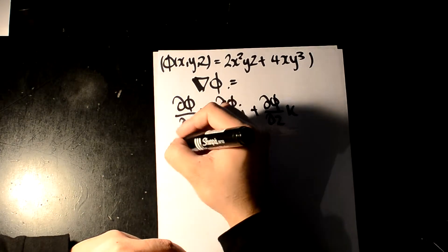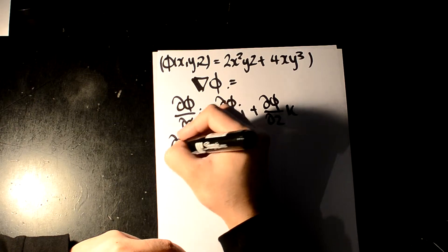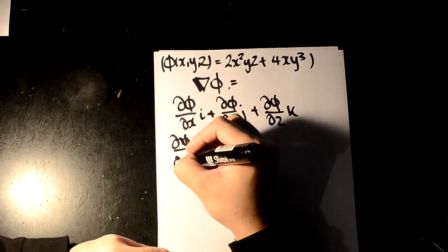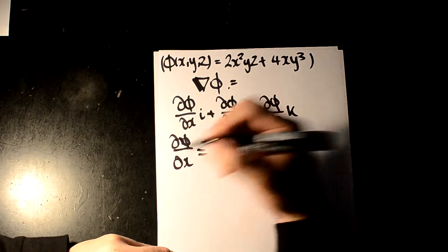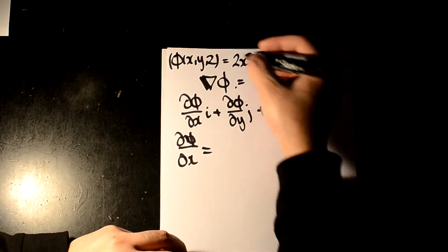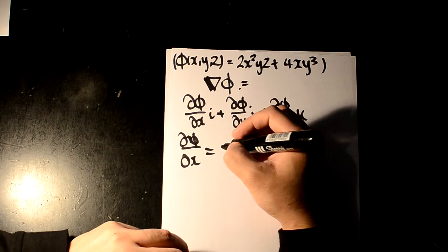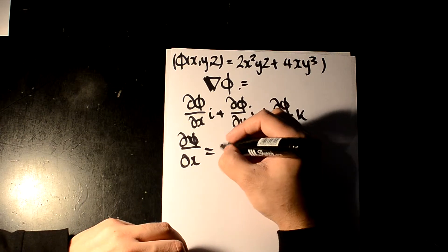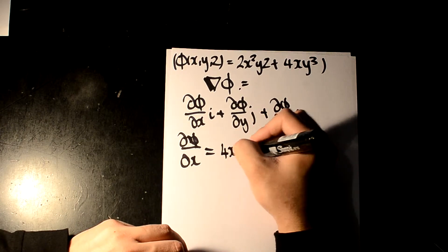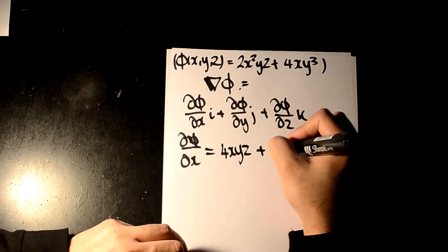So what they're actually asking is for you to differentiate this in terms of x, in terms of y, and in terms of z. So now let me take this entire function and differentiate it in terms of x. So that's holding all the y's and z's as constants. Here we're going to get 4xyz plus 4y cubed.